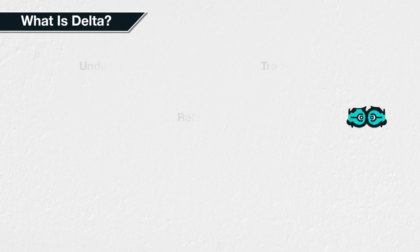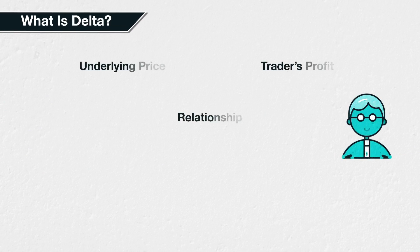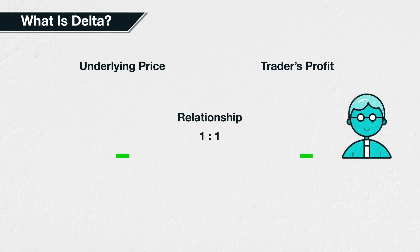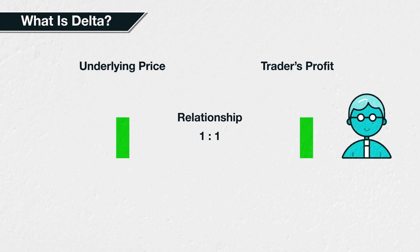When a trader buys or sells an asset directly, their profit changes in a linear one-to-one manner with the underlying price of that asset. For example, if you purchase one Bitcoin and the price of Bitcoin subsequently increases by $1,000, you have made a $1,000 profit. This means that for every $1 increase in the underlying price, you have made a $1 profit.